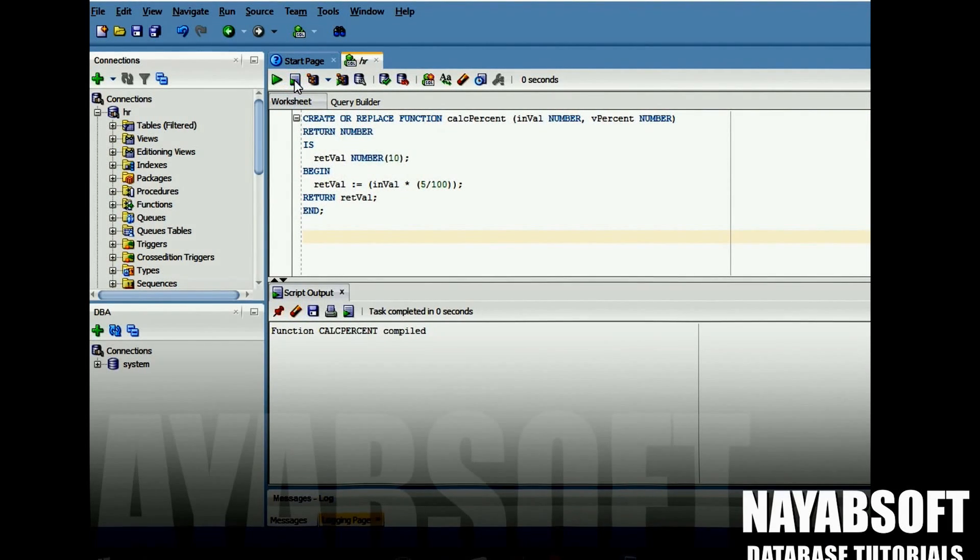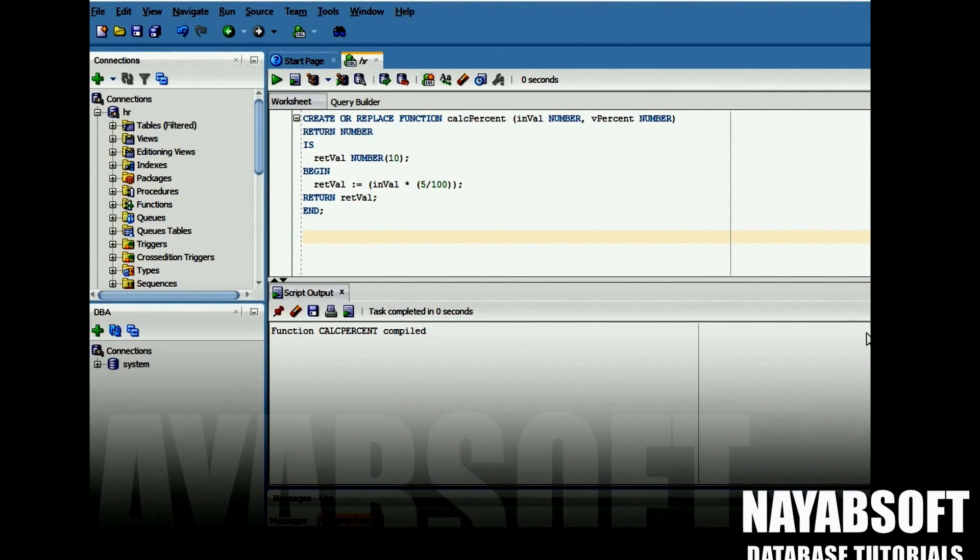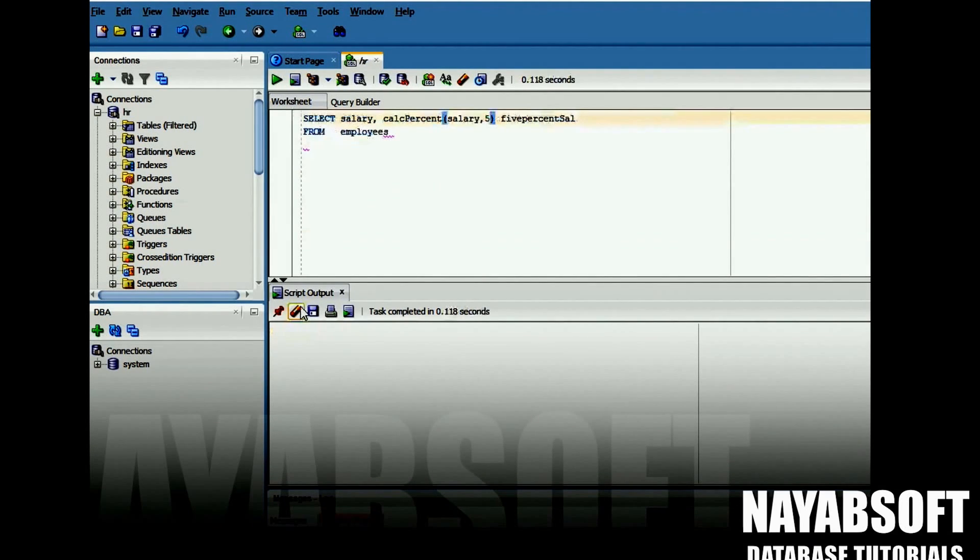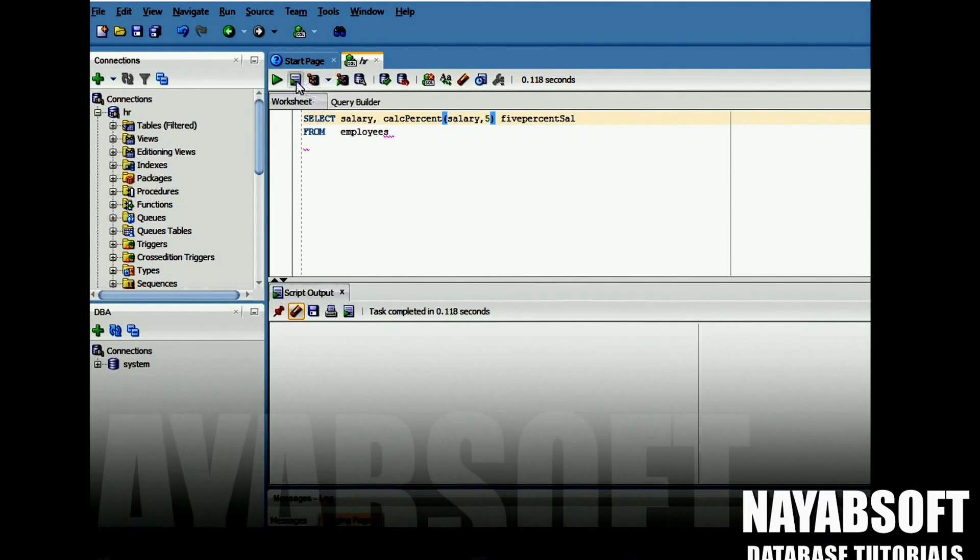Now we are going to use this function in an SQL statement. In this statement we are querying the employees table. In the select list we are fetching salary and using the calcPercent function to calculate 5% of the salary. We are using an alias name for the column. We are not restricting our rows, so we are not using a where clause. So let's execute the statement.